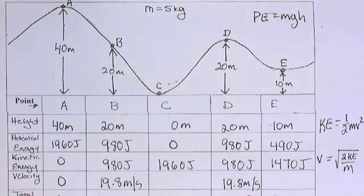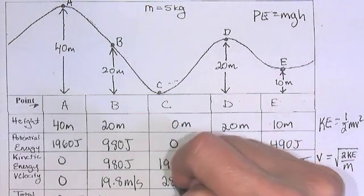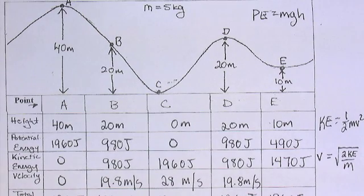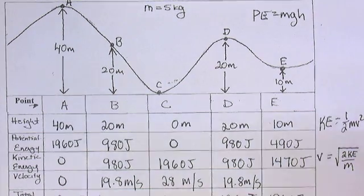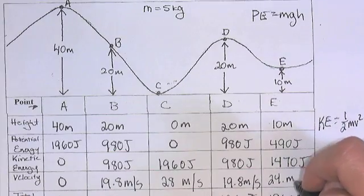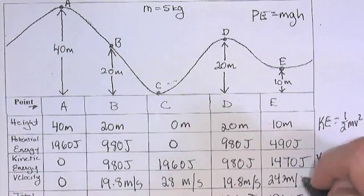And then I'll do the other two. 1960 times 2 divided by 5 equals square root, 28. And that should be faster. So, that makes sense. And last but not least, 1470 times 2 divided by 5 equals 24.2 meters per second.